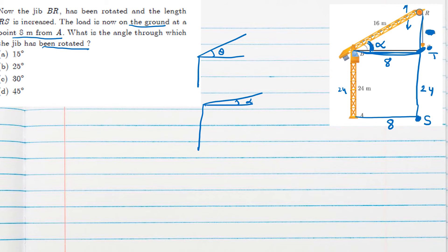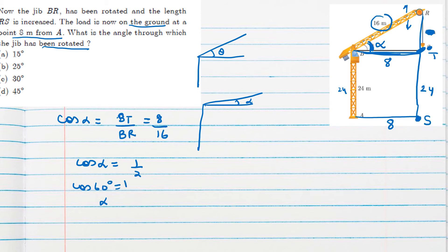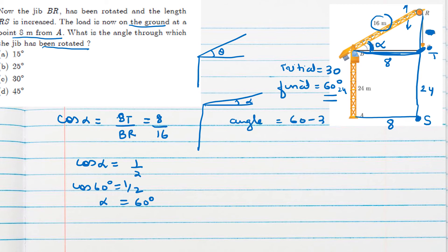The jib length BR remains 16 meters and BT is 8 meters. Applying cosine: cos alpha equals adjacent over hypotenuse equals BT over BR equals 8 over 16 equals 1/2. Since cos 60° equals 1/2, alpha equals 60°. The initial angle was 30° and the final angle is 60°, so the jib has been rotated by 60° minus 30° equals 30 degrees. Option C is the correct answer.